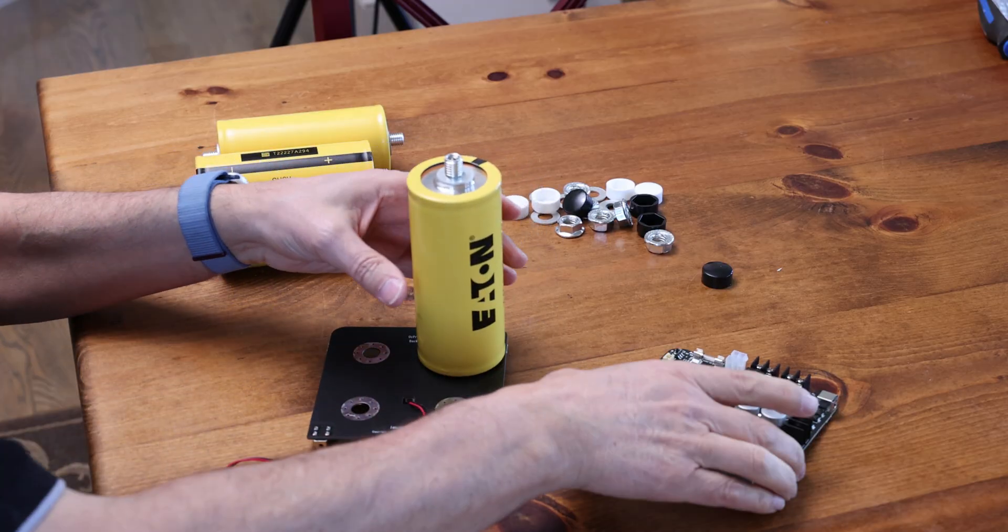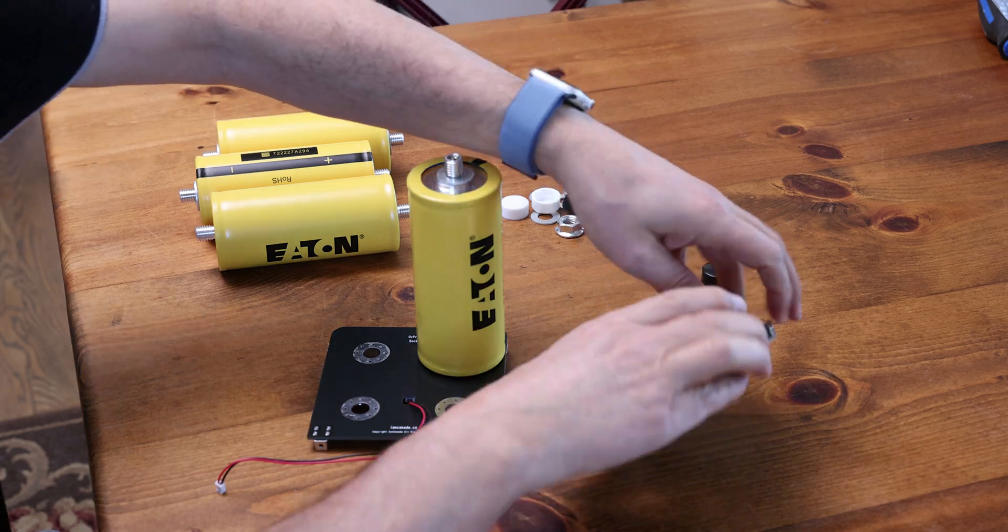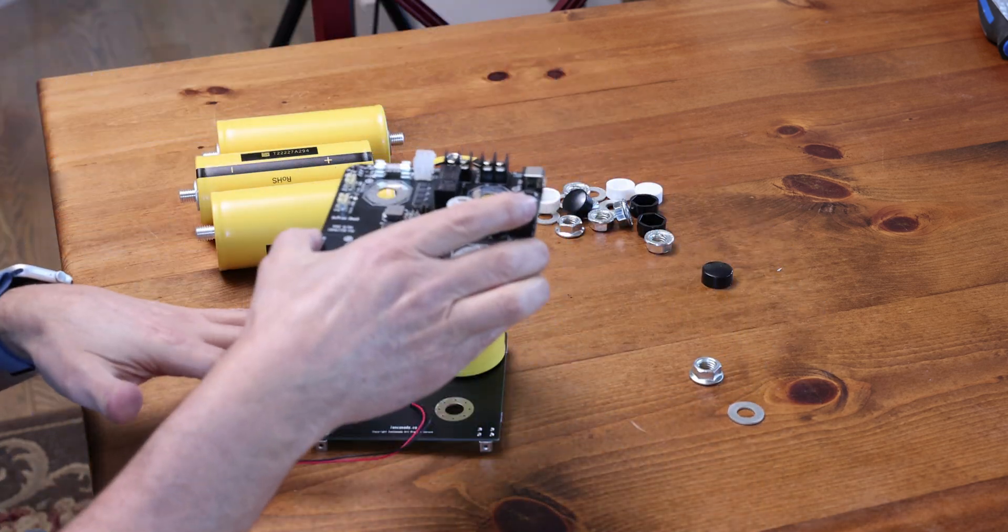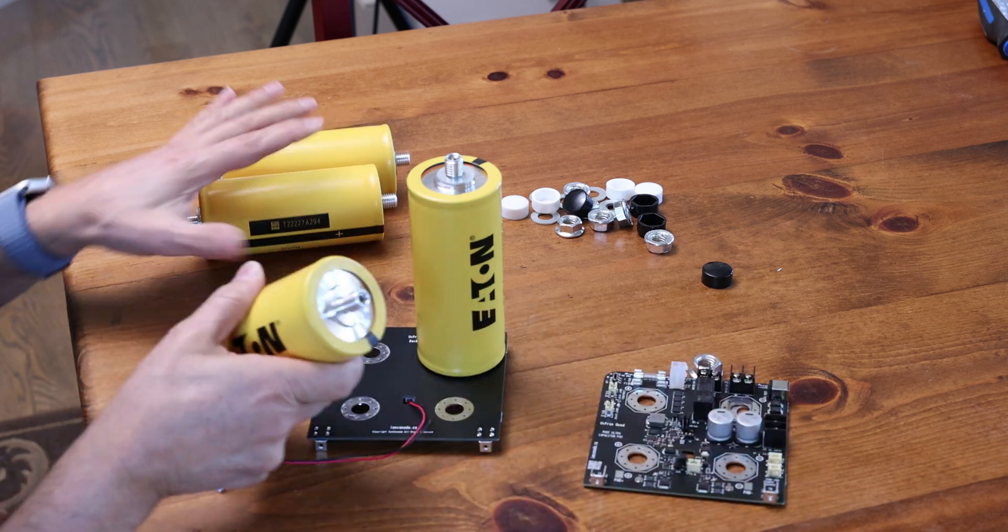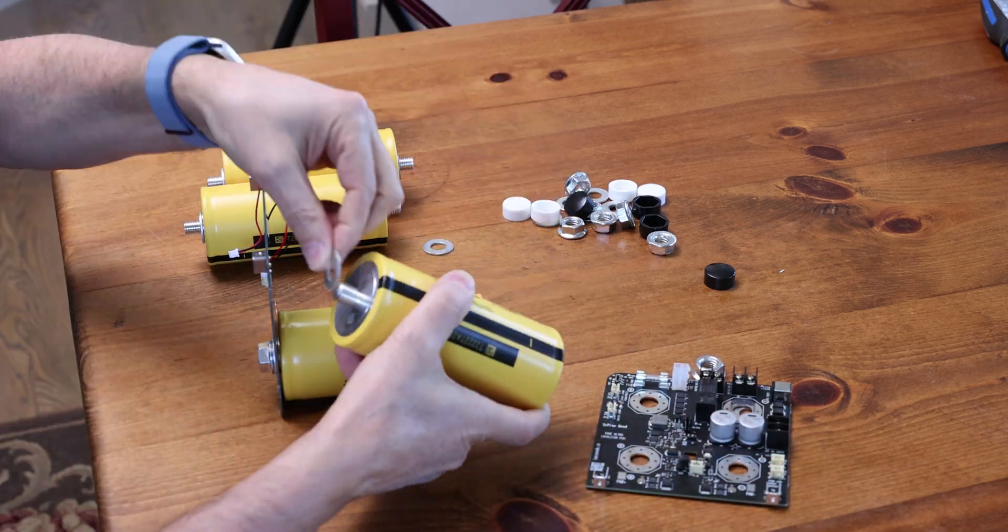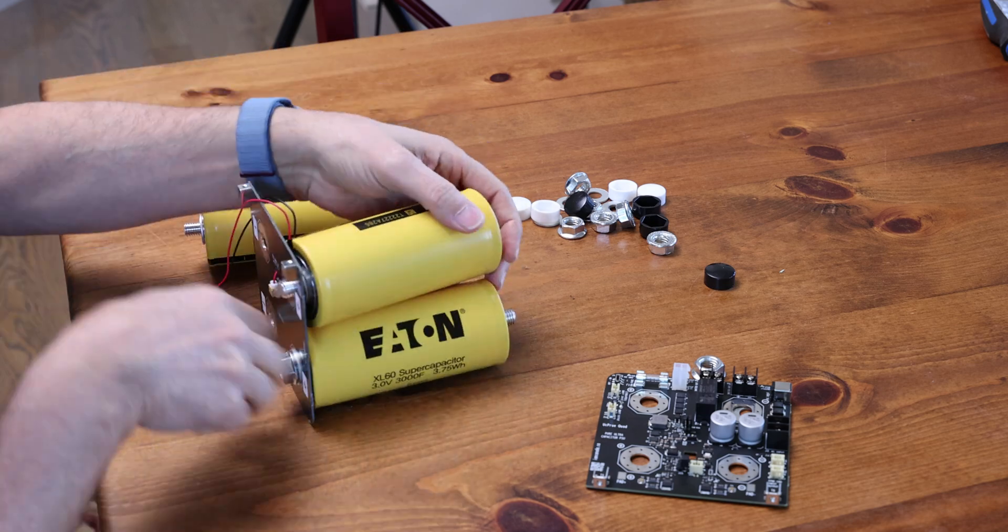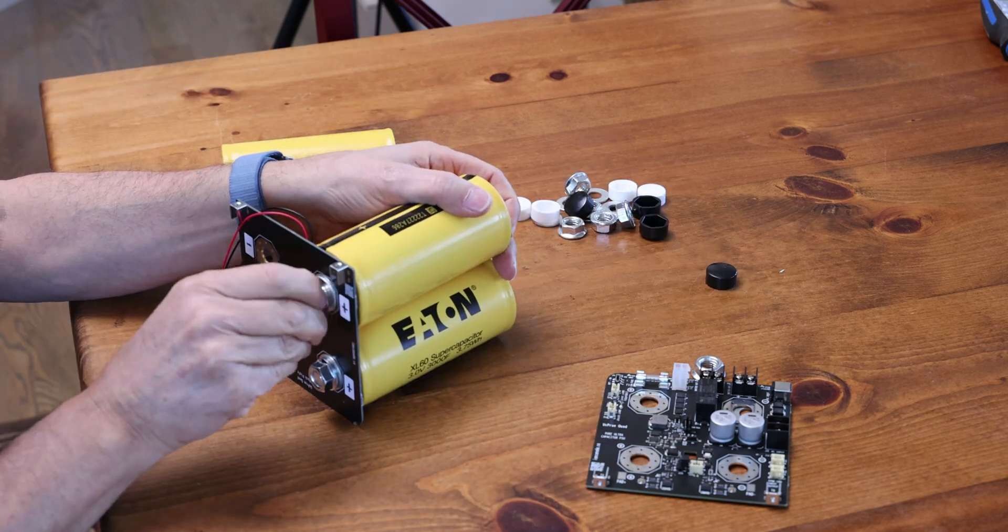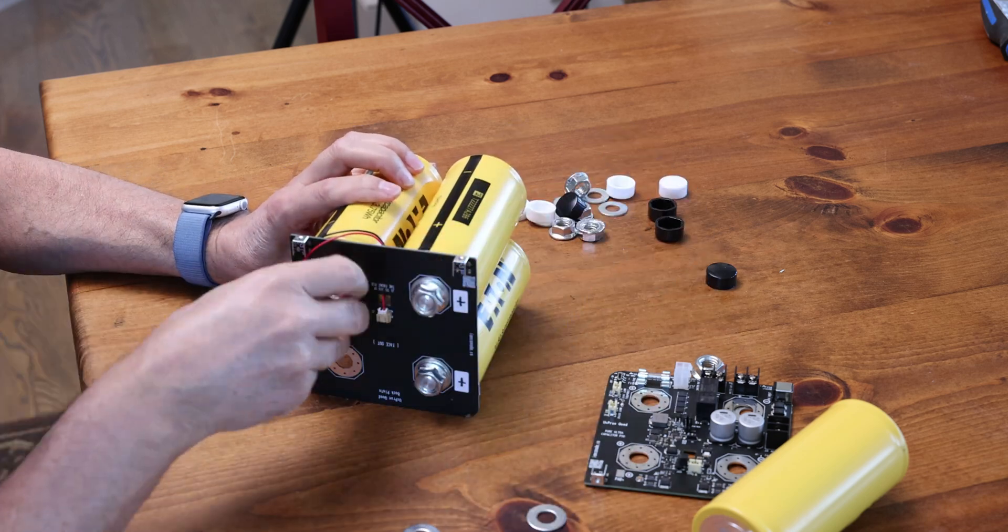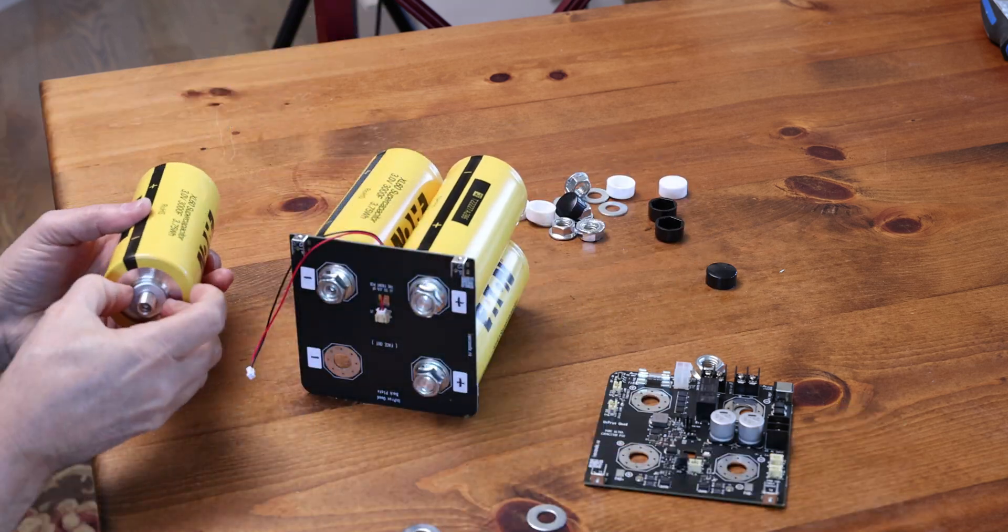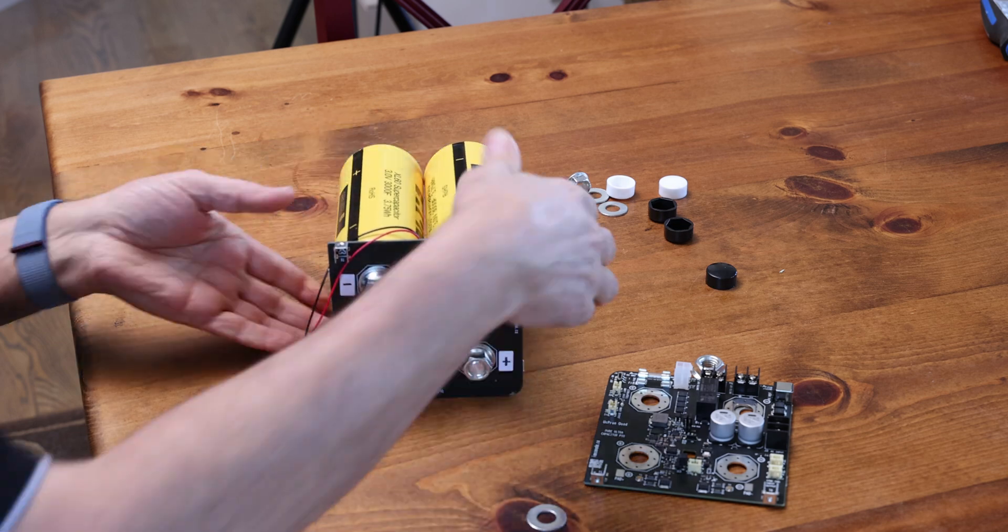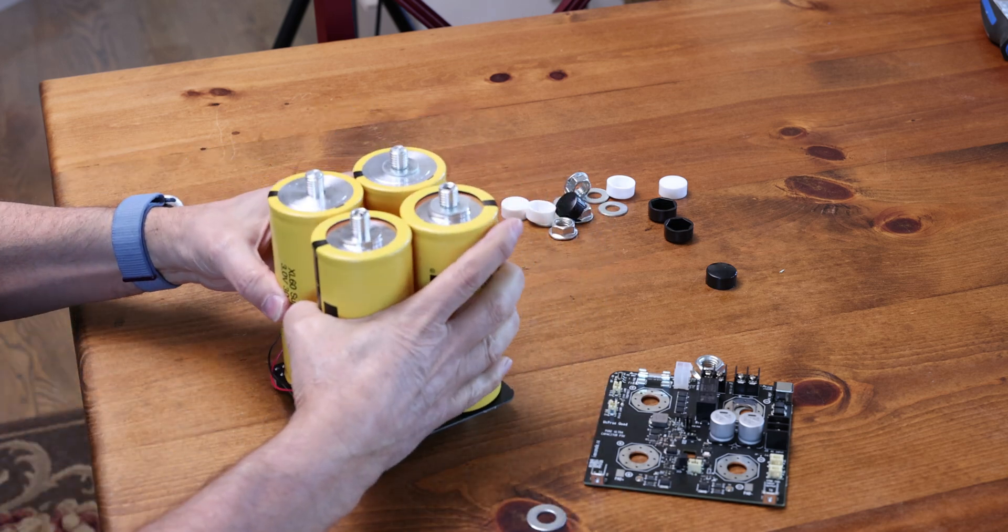So in order to mount this on top you can't just do one at a time. You have to do the bottom four and then the top. So we're going to populate all four bottom ones the same way we put the first one.